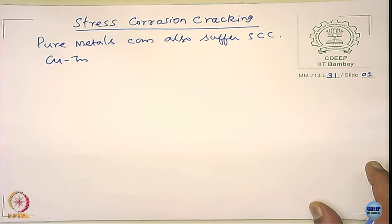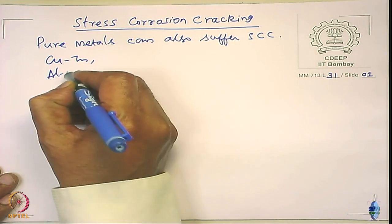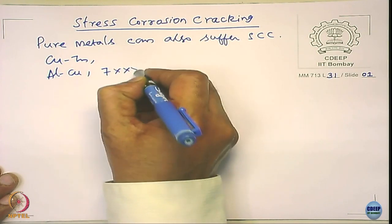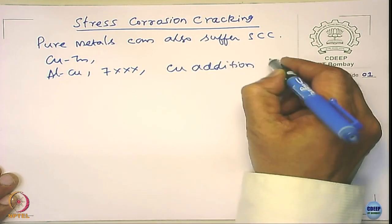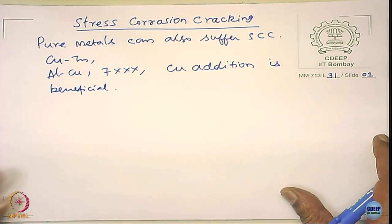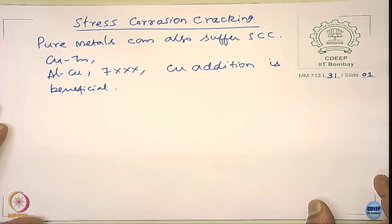Even in the copper system, when you talk about a copper-zinc alloy system, as zinc content increases the stress corrosion cracking increases. On the contrary, if you take aluminum-copper alloy systems — especially the 7000 series aluminum alloys — addition of copper is beneficial. So it is always useful to understand how the chemical composition of an alloy can affect stress corrosion cracking.